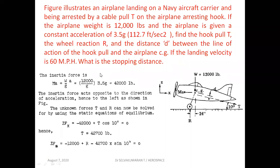We are going to use the simple equilibrium equations. The inertia force MA is the mass into acceleration — mass is W/G into A. W is given as 12,000 pounds divided by G, and acceleration is 3.5G, so the G's cancel. So 12,000 into 3.5 gives 42,000 pounds as the inertia force.